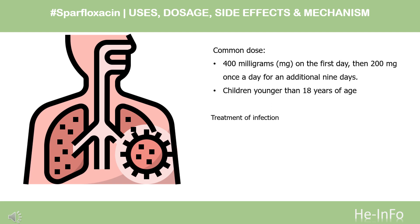Dose. For oral dosage form tablets, for treatment of infection: Adults — 400 mg on the first day, then 200 mg once a day for an additional 9 days. Children younger than 18 years of age — use and dose must be determined by your doctor.